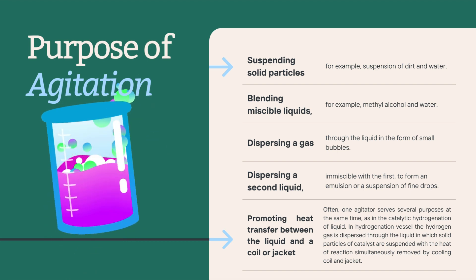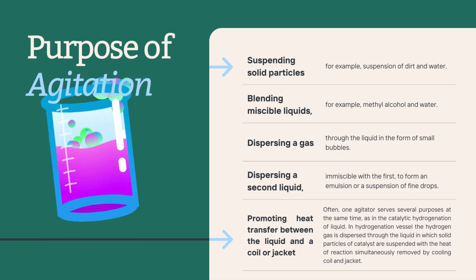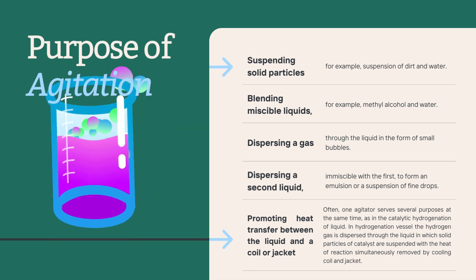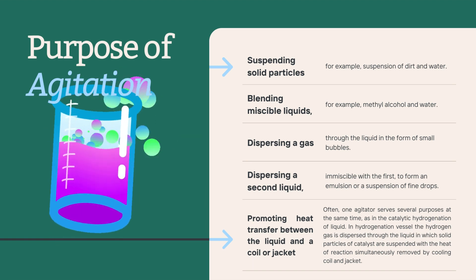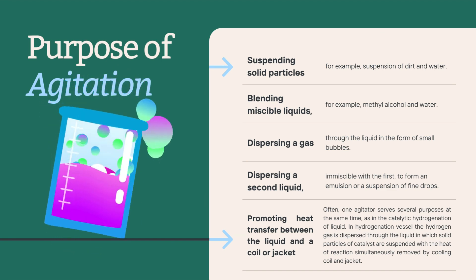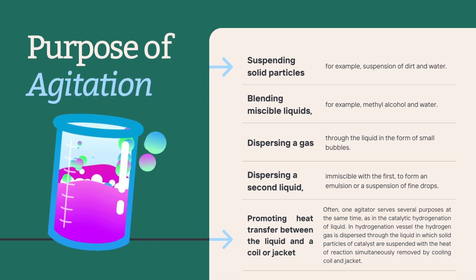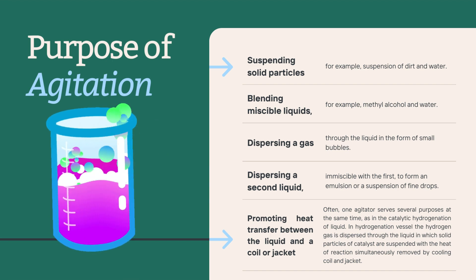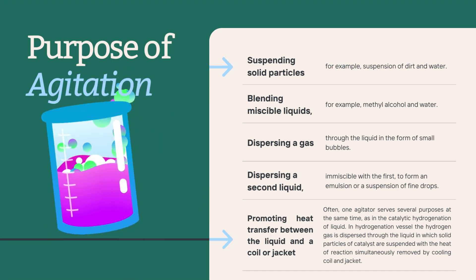The fourth purpose includes dispersing a second liquid immiscible with the first to form an emulsion or suspension of fine drops — like shaking a bottle of salad dressing to combine the oil and vinegar into a temporary emulsion. The fifth purpose includes promoting heat transfer between the liquid and a coil or jacket.